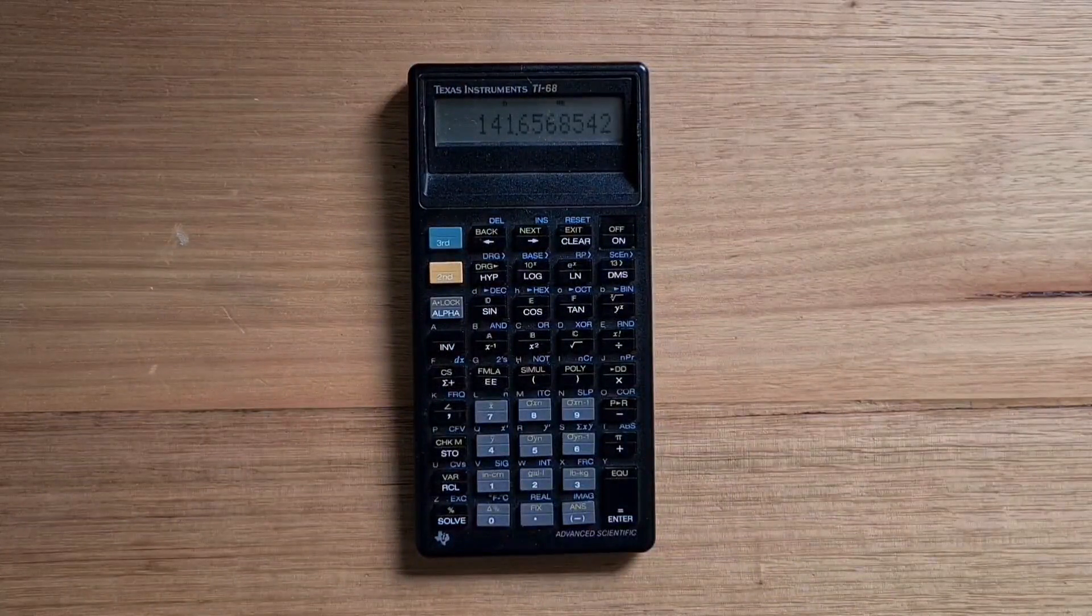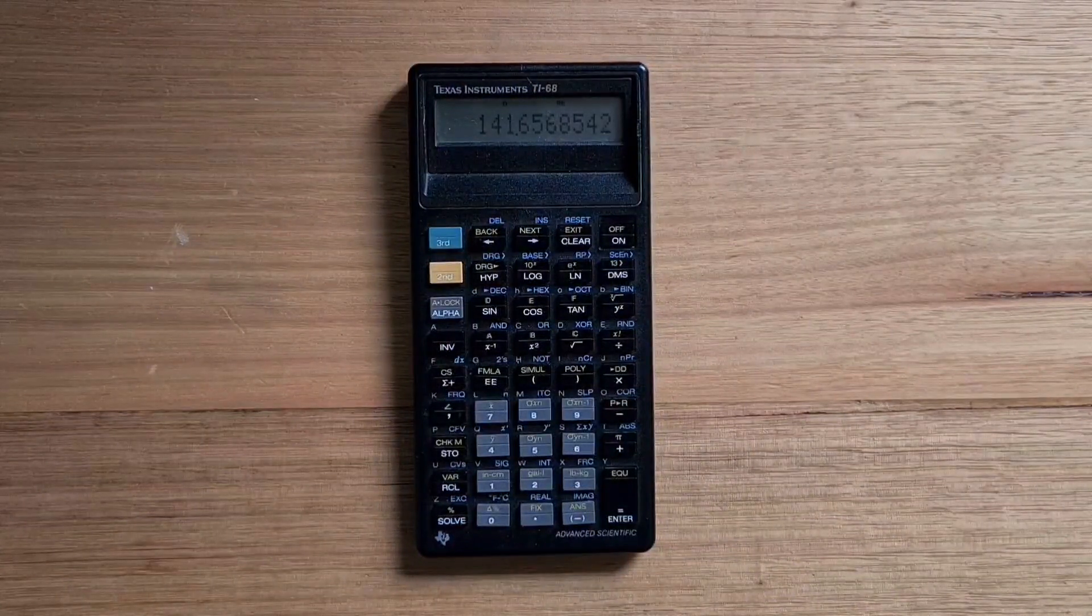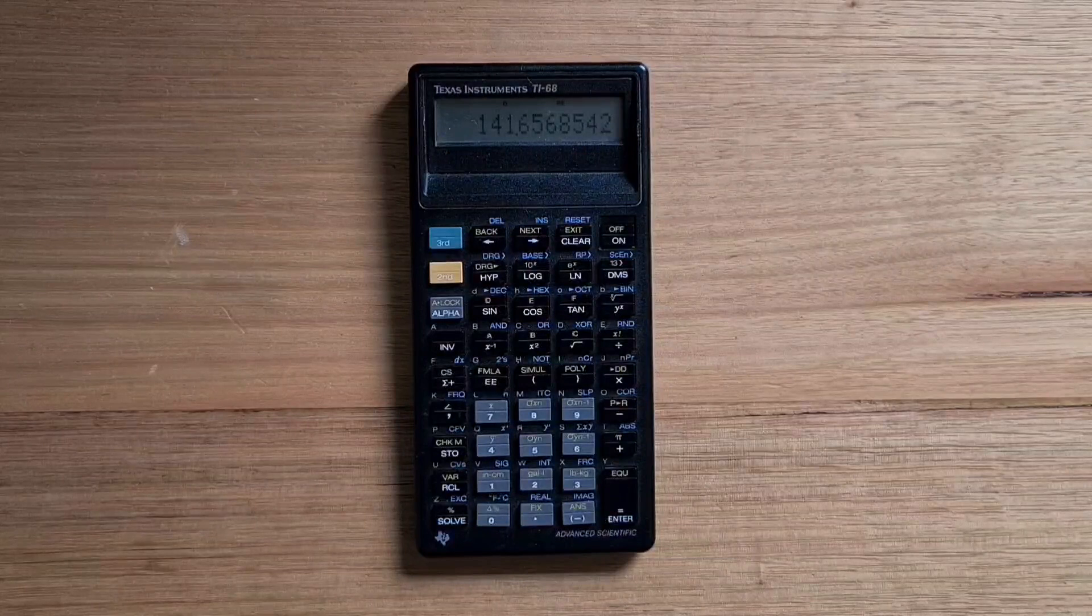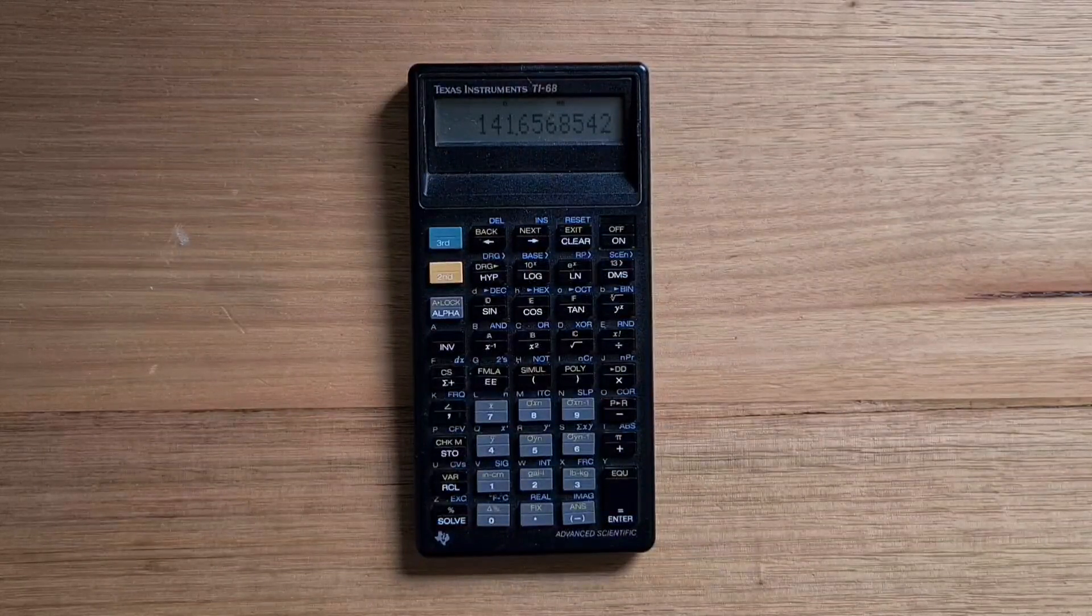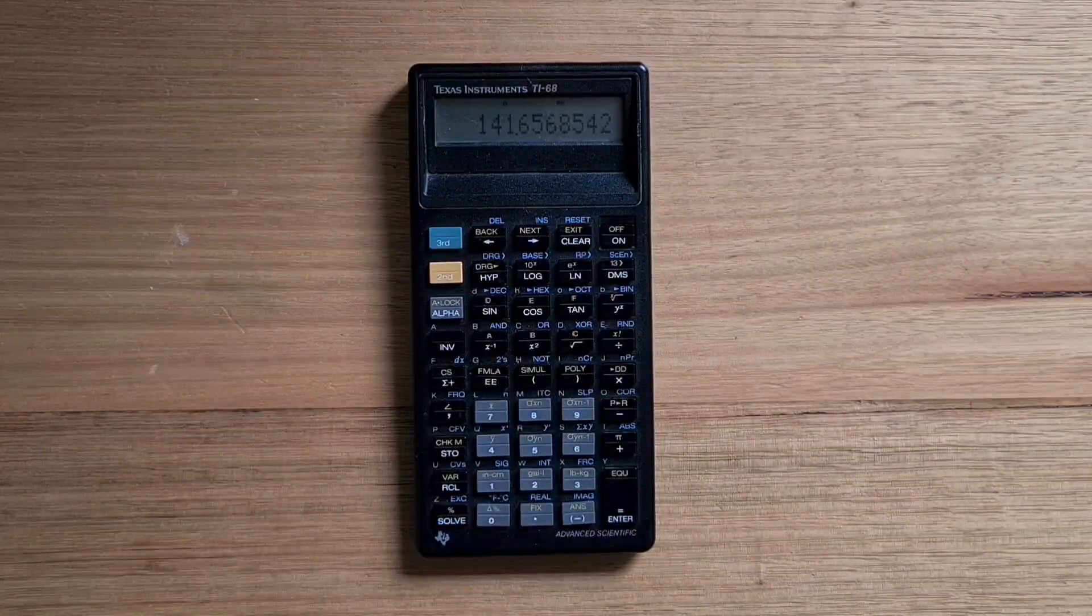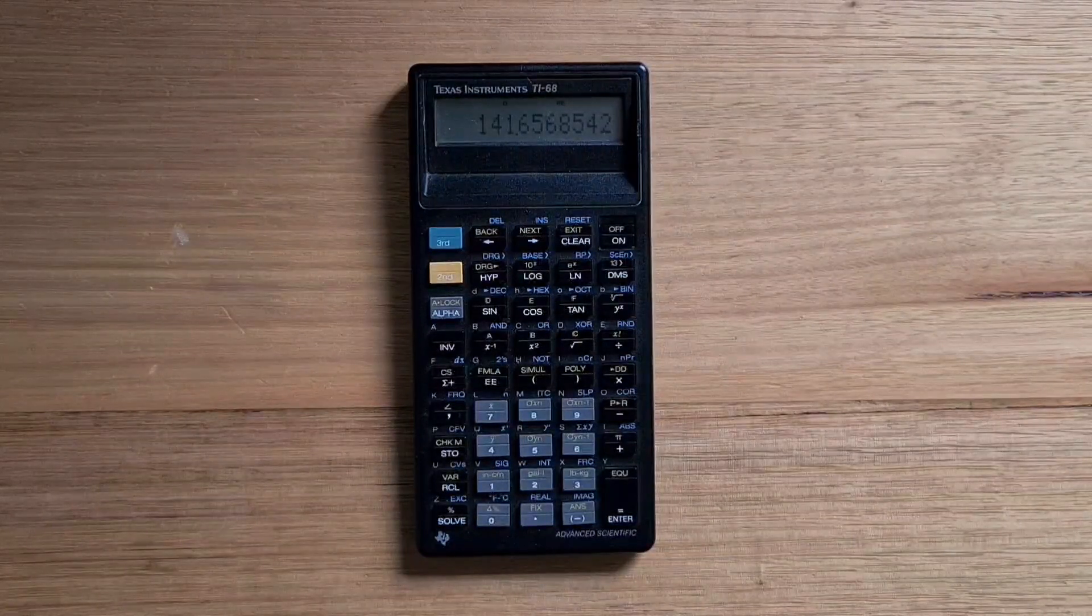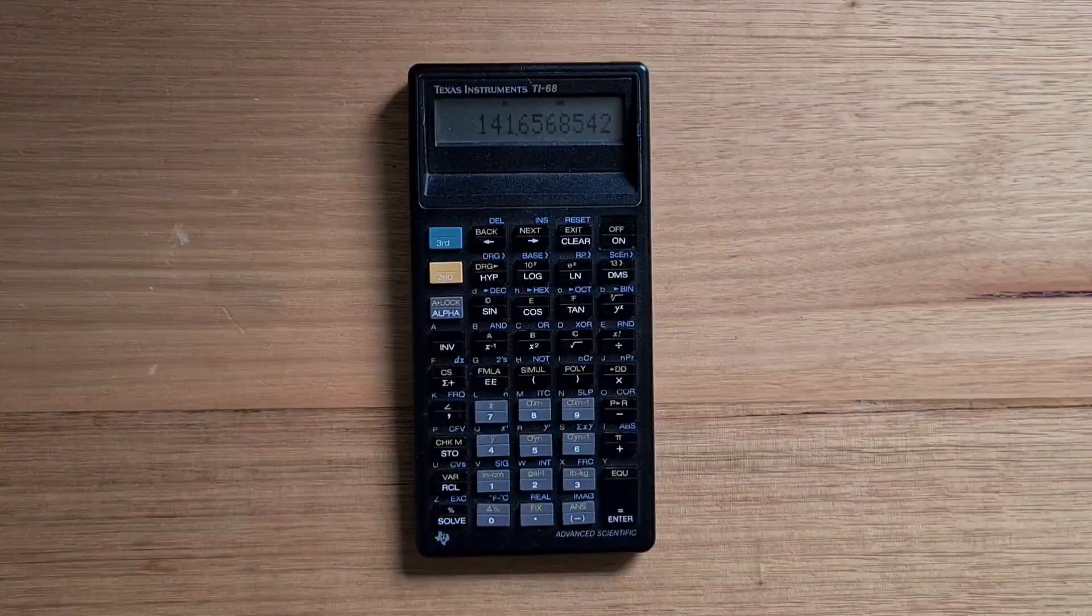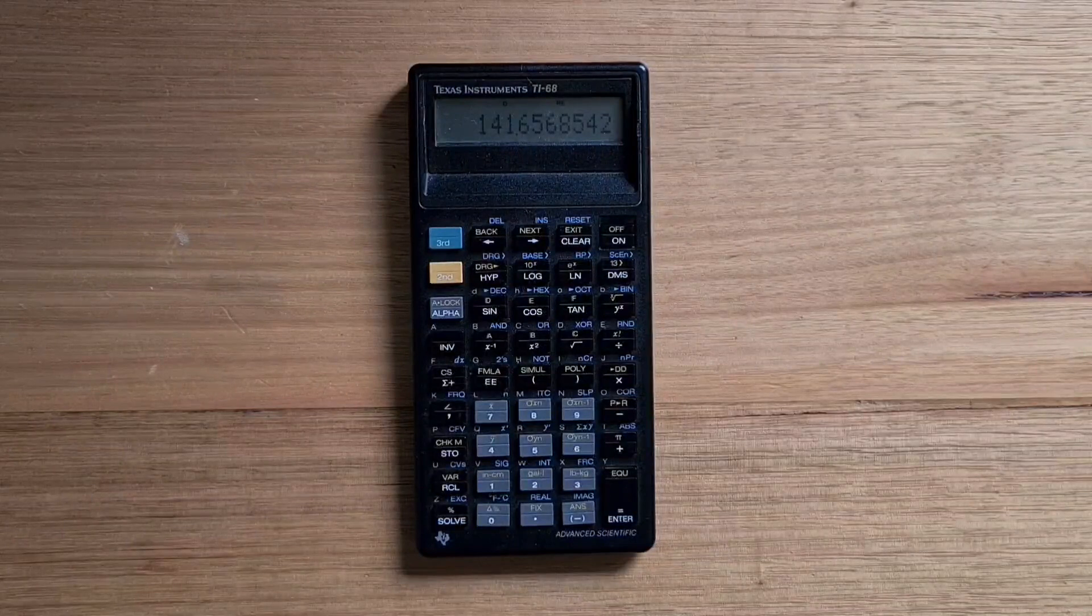Interestingly, the TI-68 also supports two levels of precision, 10 digit and 13 digits, although only 10 digits are displayed. You can switch between these two modes on the TI-68 using the shift to 13 key.